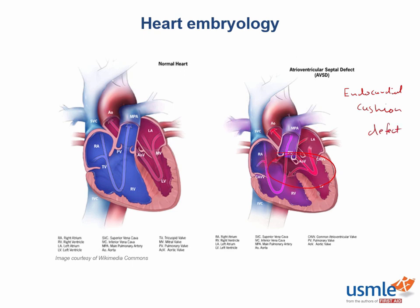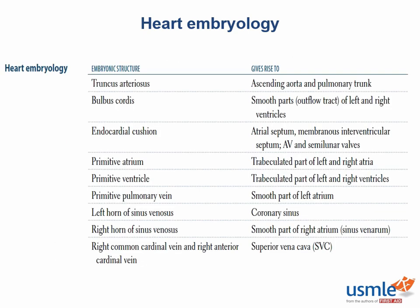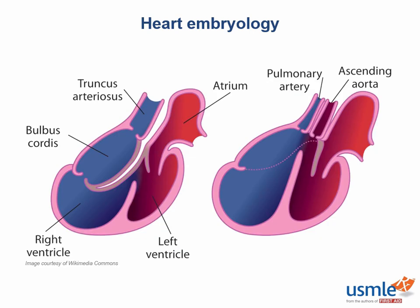Now, as you may already know, there are a lot of different ways to learn the same thing, so just do whatever comes easiest. The truncus arteriosus is going to split to form the ascending aorta as well as the pulmonary trunk, and you can see a depiction of this here. Here you have the truncus arteriosus, and it's going to split to form the ascending aorta as well as the pulmonary trunk.